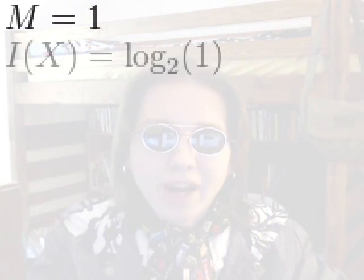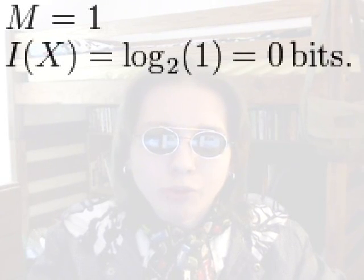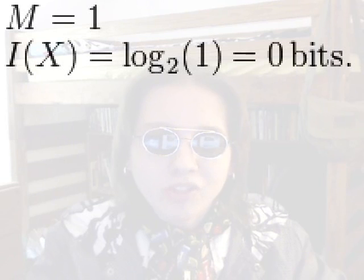What about the broken coin? We can calculate the information we receive from that too. Since it only lands on heads, it only has one possible outcome, so M is 1. I of X equals log base 2 of 1, which equals 0 bits. So with the broken coin as the information source, our uncertainty is 0 bits when we flip it, and when it lands, we get 0 bits of information — no information — because it always lands on heads.